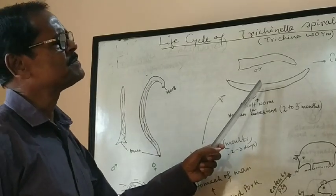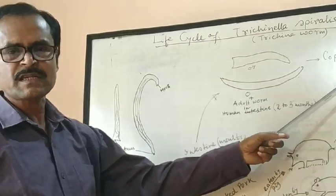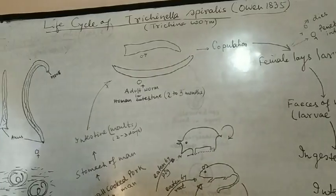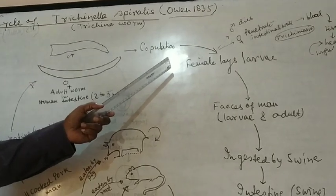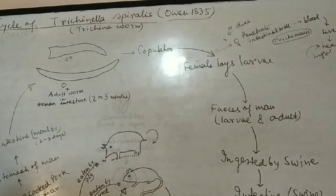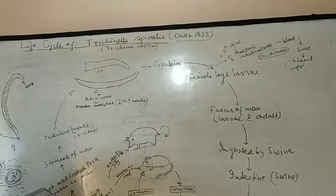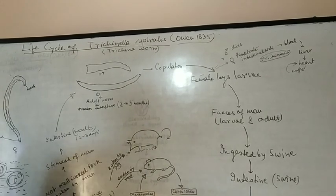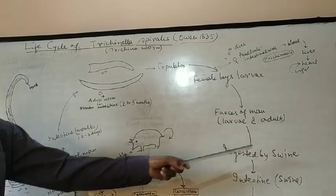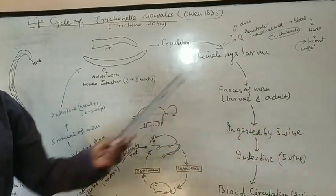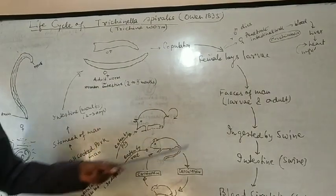The female then lays larvae. That's why it is known as viviparous activity of the female species. These larvae pass through the fecal discharge of the host. The fecal matter is discharged outside, and there may be chances of ingestion by swine. The larvae is the most infective form of the worm and is ingested by swine.